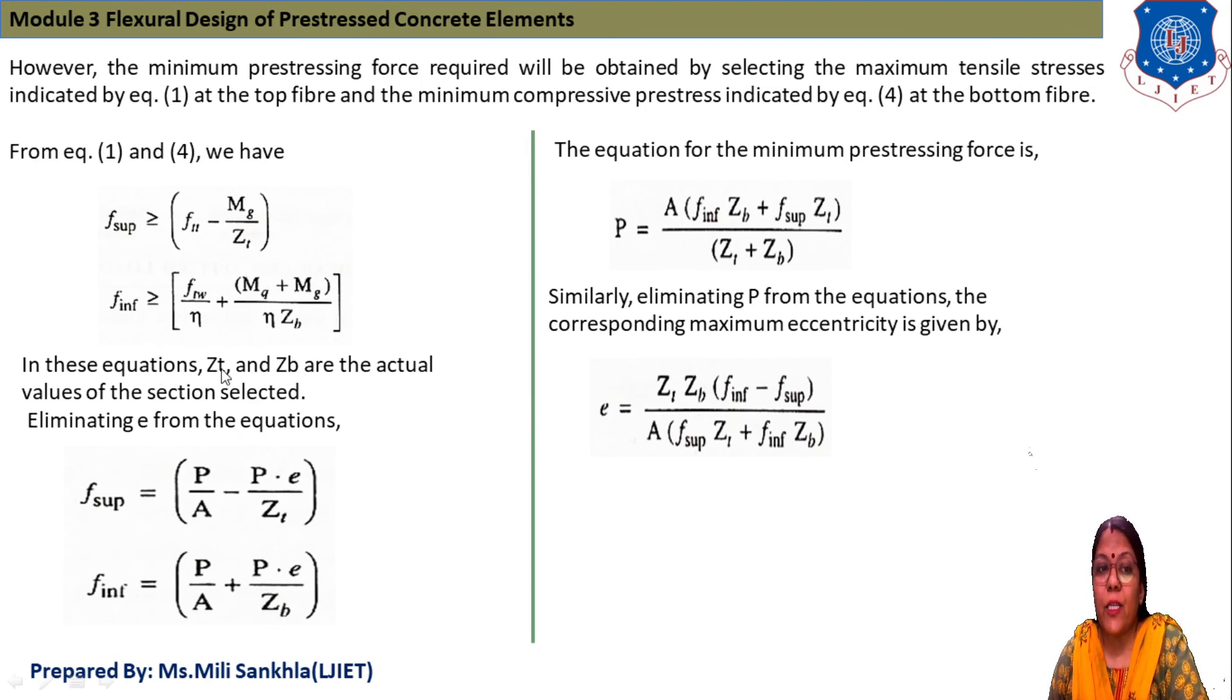In this equation, ZT and ZB are the actual values of section selected. First we assume, then after finding the dimension, we use the actual value of ZT and ZB. Please take care. After finding actual values, when we find out top stresses and bottom stresses, we take the actual value of ZT and ZB.